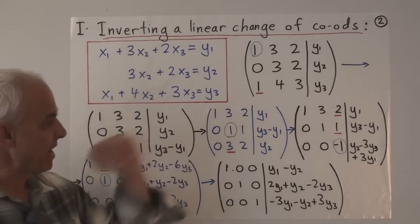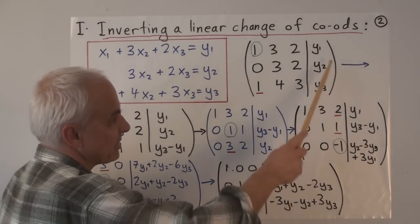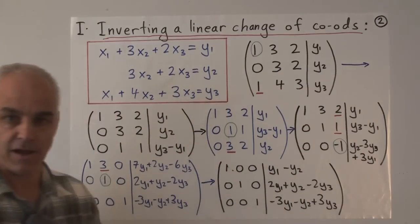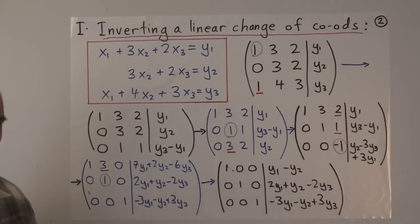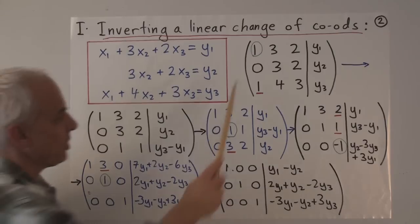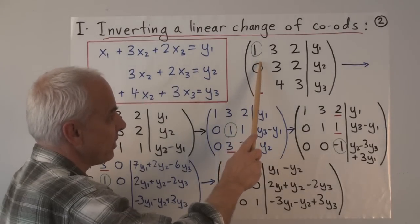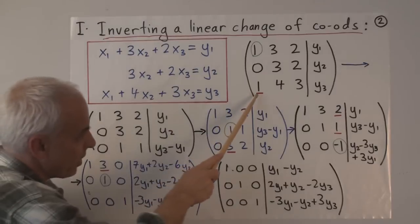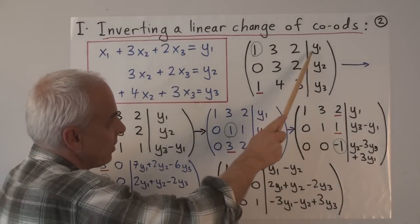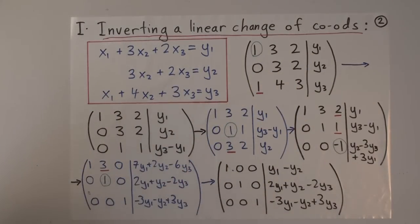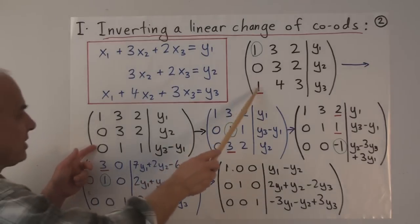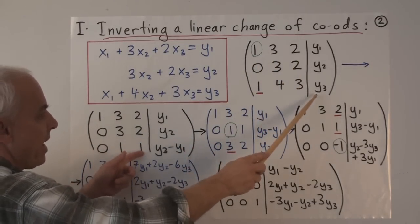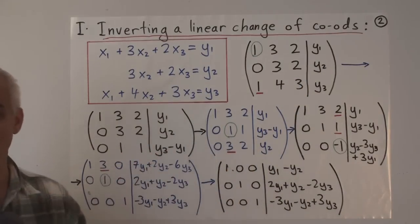We set up the augmented matrix for this system — it's just as ordinary, except there's a y1, y2, and y3 on the right-hand side. We're going to row reduce that, starting with this pivot here, and using it to eliminate the entries below it. To get rid of this one here, we're going to take this row and subtract one times the first row, giving us 0, 4 minus 3 is 1, 3 minus 2 is 1, and y3 minus y1.